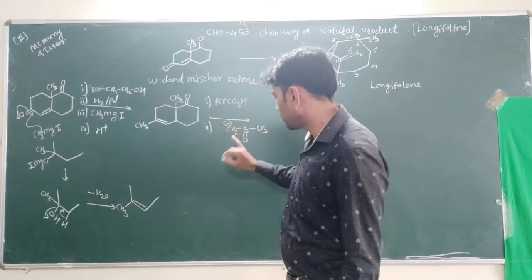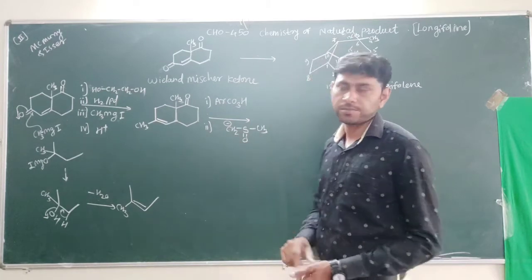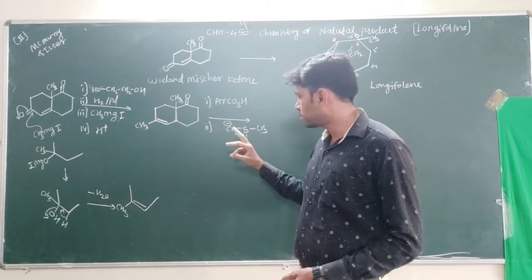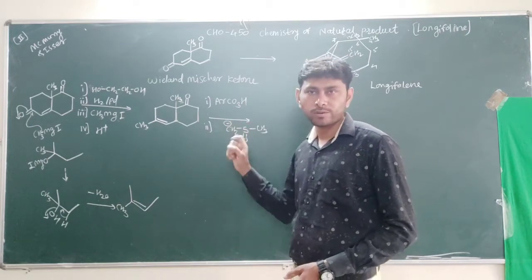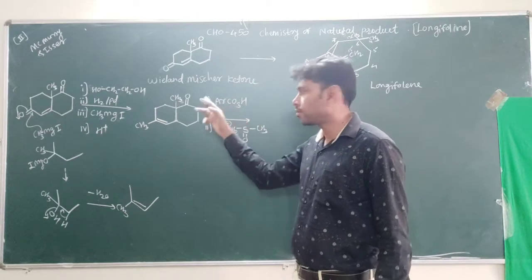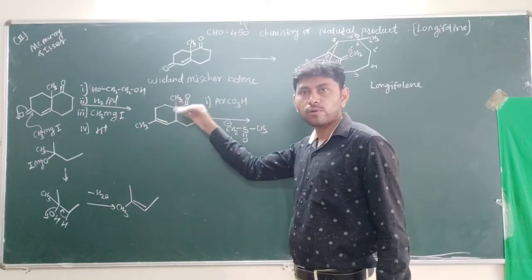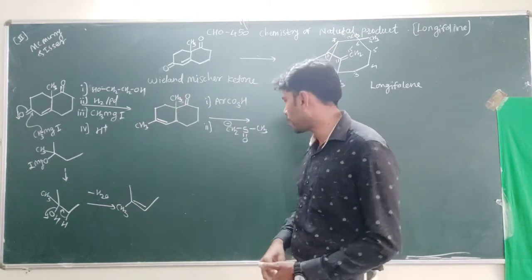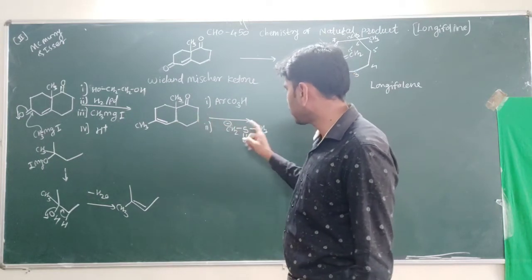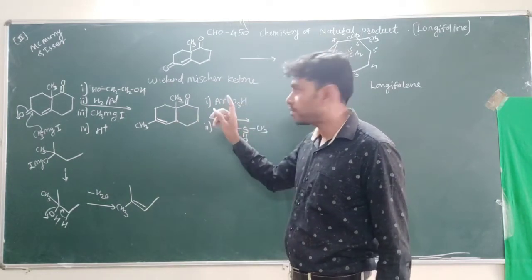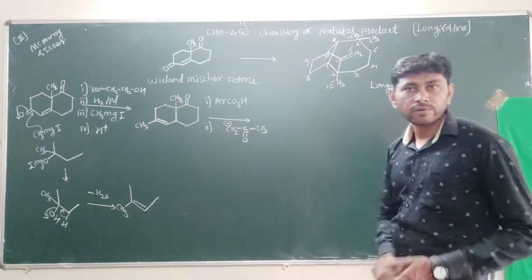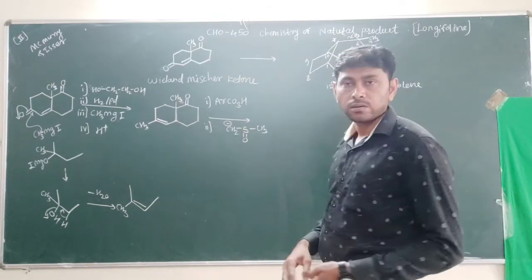In this second step we also use a base. The function of this base is to remove a proton. The base removes the proton from the active site and converts it, leading to enolate ion formation. This enolate ion formation leads to the formation of the 7-10 bond.